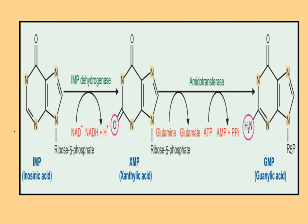For GMP formation: IMP is converted to xanthosine monophosphate, XMP, by IMP dehydrogenase with NAD converted to NADH. Then XMP is converted to guanosine monophosphate by amidotransferase in an amination reaction. ATP is converted to AMP and pyrophosphate.